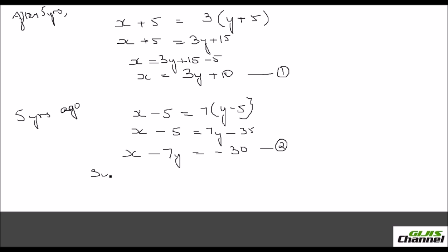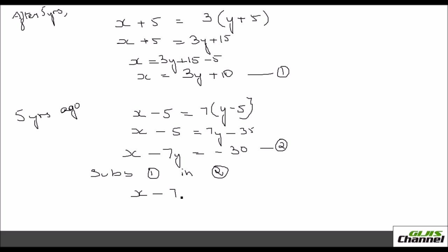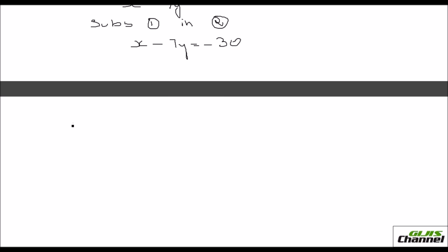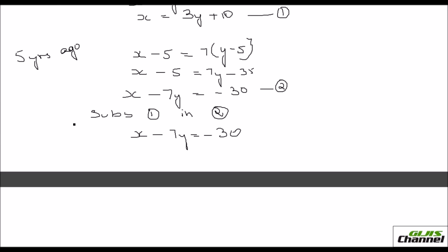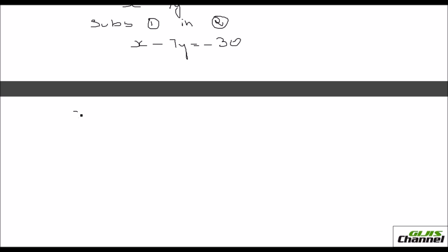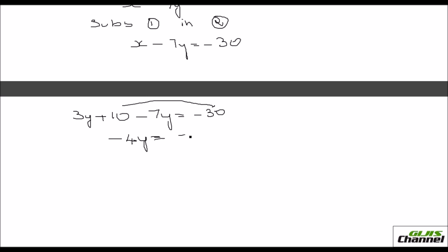Now substitute equation 1 into equation 2. Equation 2 is x minus 7y equals negative 30. Replace x with 3y plus 10: (3y plus 10) minus 7y equals minus 30. This gives minus 4y, and taking 10 to the other side gives minus 4y equals minus 40, so y equals 10. The son's age is 10.